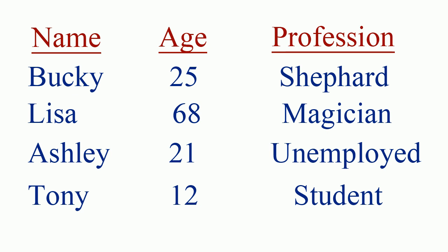Say I wanted to make a table to organize all of my friends. I would have each column with a specific category. For example, the first column would be 'name,' another column would be 'age,' and my last category for this example would be 'profession.' So columns are kind of like categories.